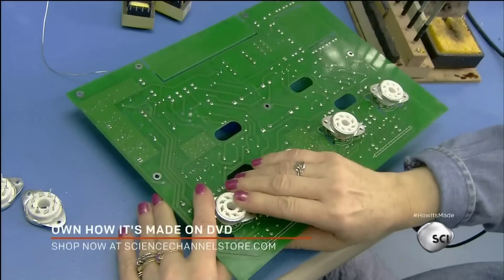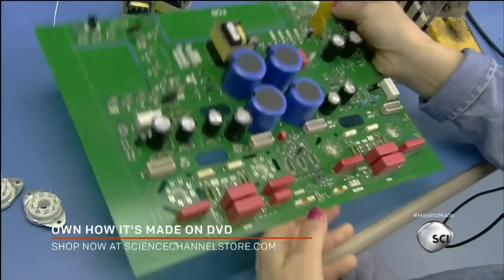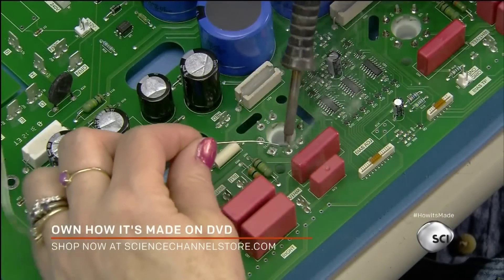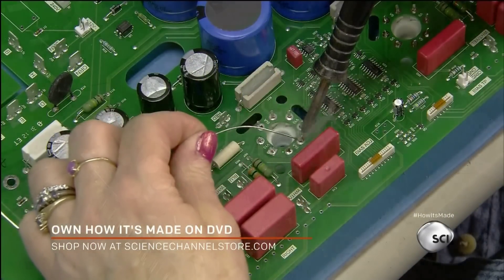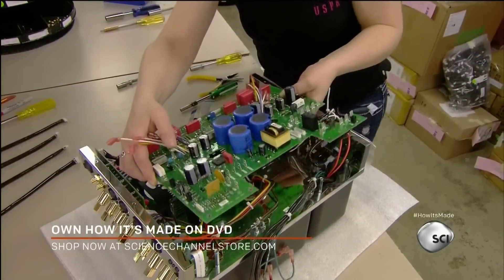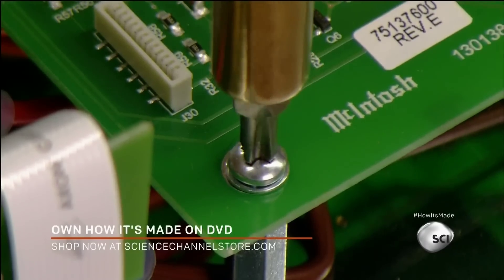They take the amp's main circuit board, plug in ceramic sockets for the vacuum tubes, and solder the socket's leads to the board. Then, after feeding the transformer leads, they mount the main board in the chassis, screwing it to post to hold it in place.